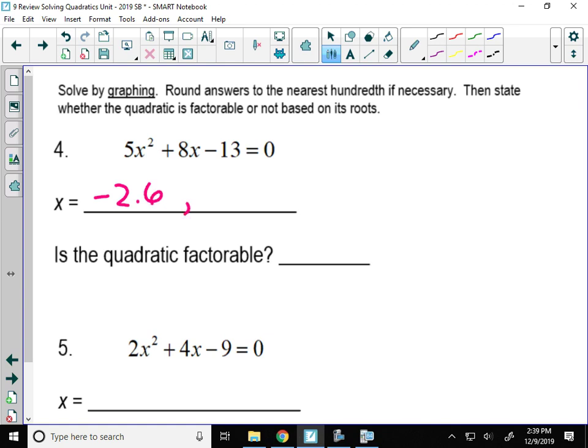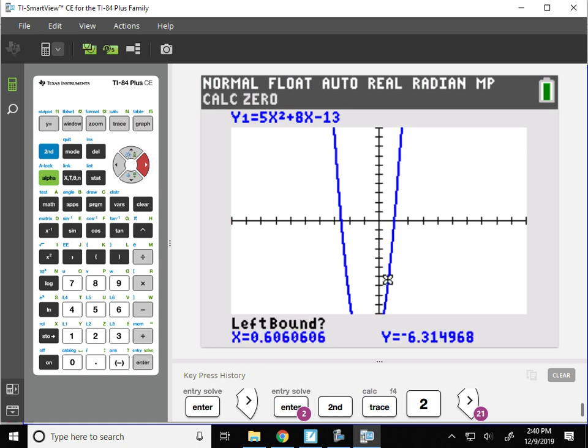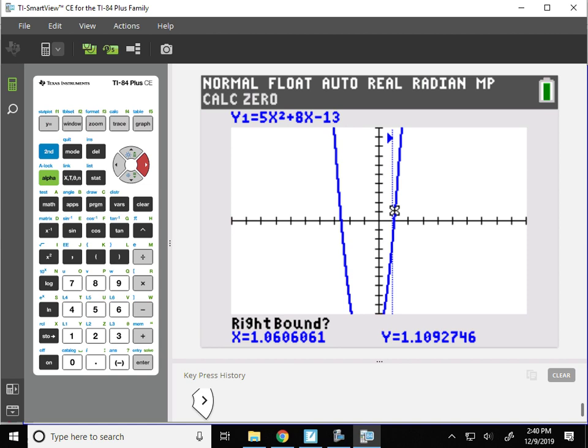Now let's find the other x-intercept. I'll trace again, second trace, number 2. I use my left and right arrows again. I want my cursor a little bit below, hit enter. Go a little above, enter a third time. And this root is at 1.